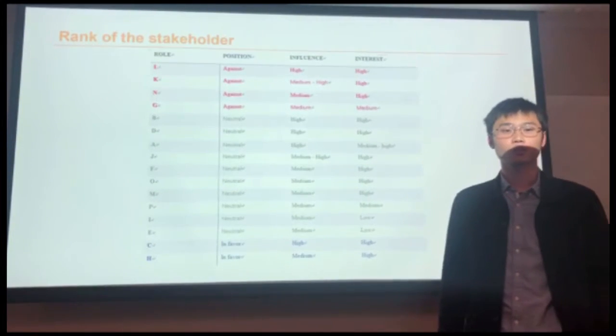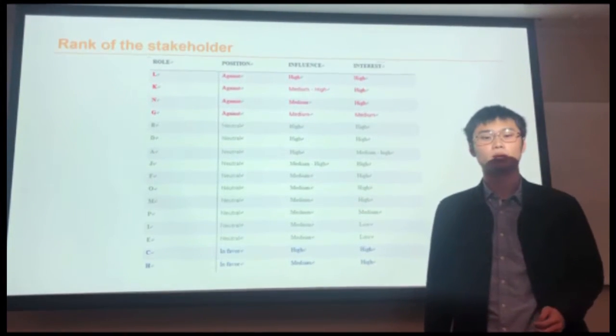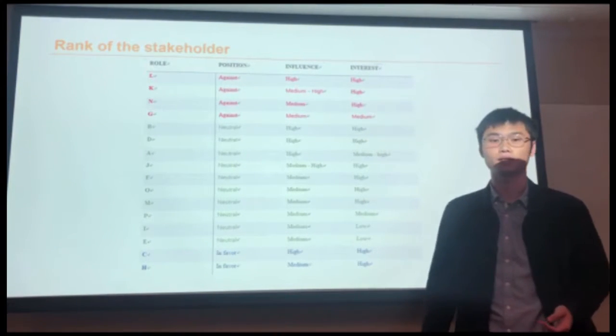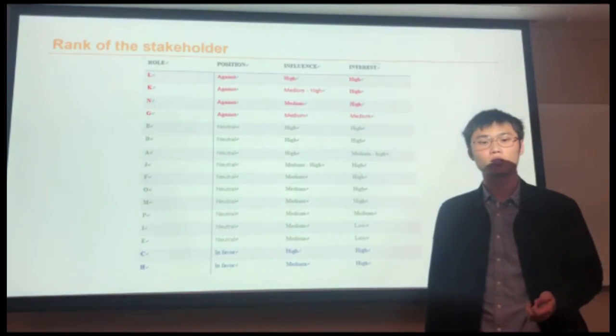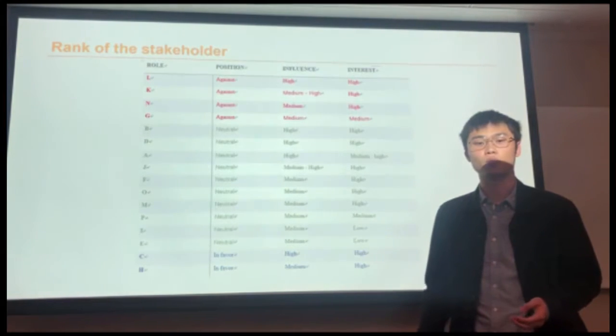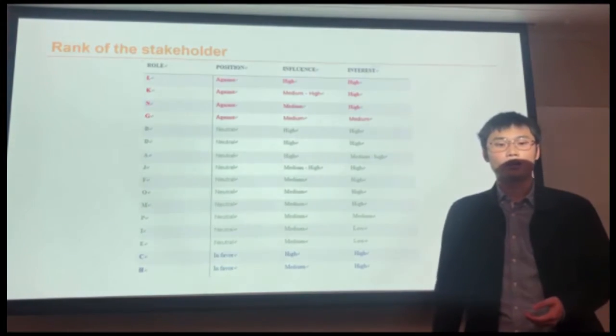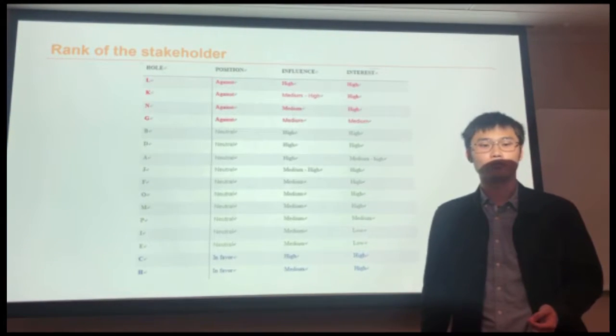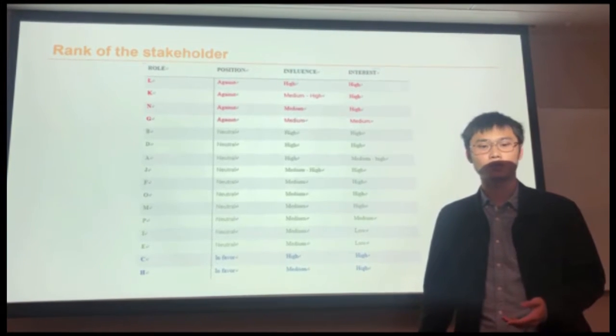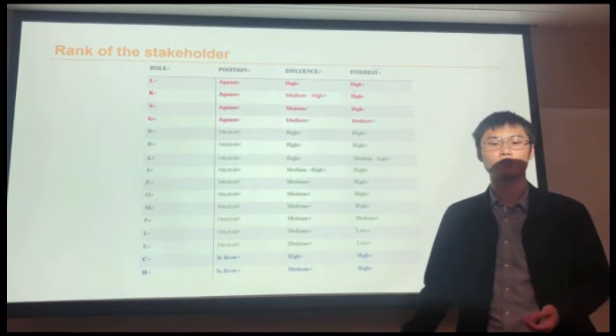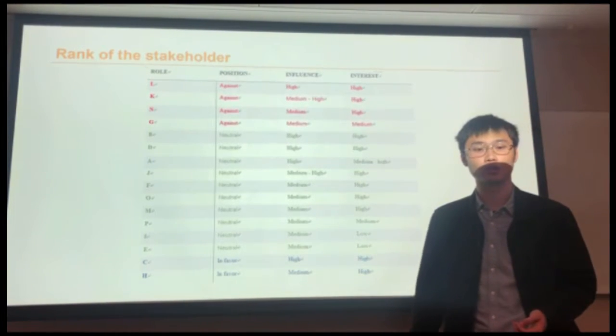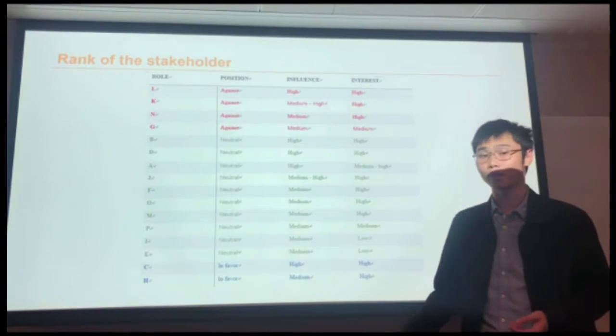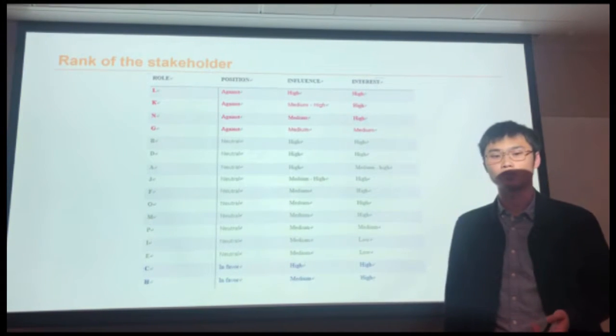Hello everyone. The next session will introduce the range of stakeholders. Here is the table. As we can see, the major stakeholders are ranked from top to bottom. Our group team believes that the stakeholders with negative position, neutral position, and high influence will be our major stakeholders. In order to turn them into a favorable position, the top red color needs to be addressed.